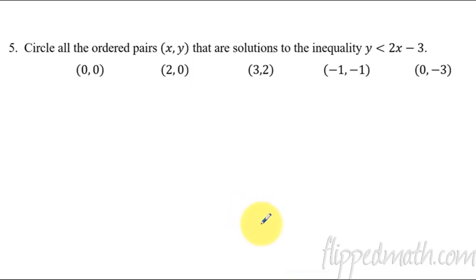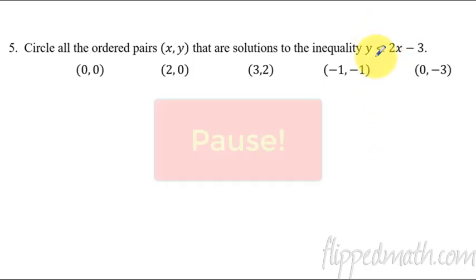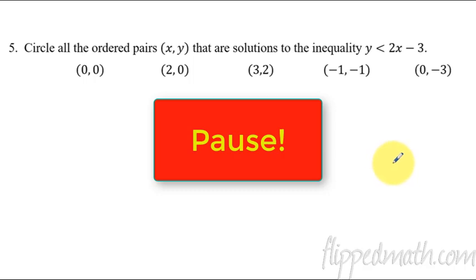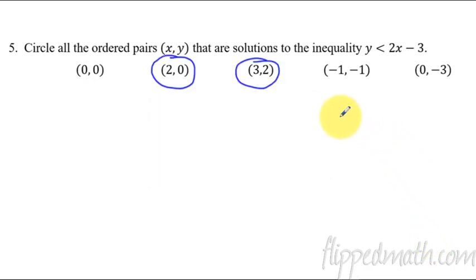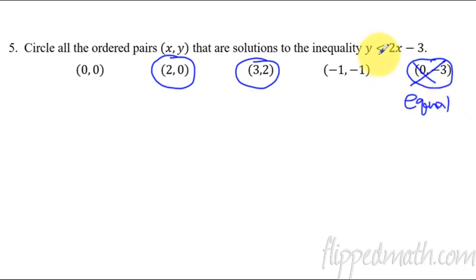Here you're going to pause this. This is very similar to our last lesson, but now we have a less than symbol, so just pay attention to that. Figure out which ones are solutions to the inequality — if you plug in the x and y, it makes the statement true. Pause now. Okay, here's the answer: these two are the only ones that will make this inequality true. You might have been tempted to circle the last one, but that is not correct because that one would actually equal. If we had had a less than or equal to, then yes, we would include that last one. But it does not count.